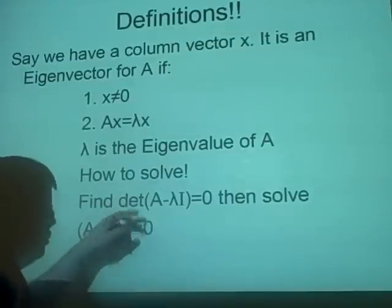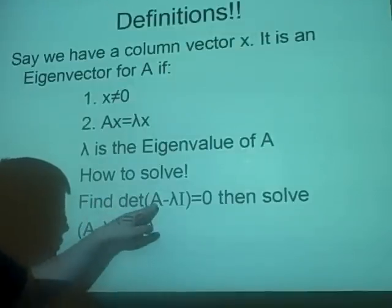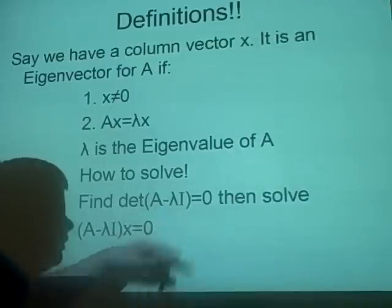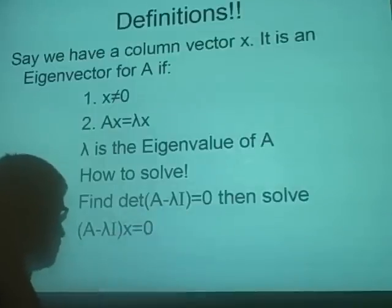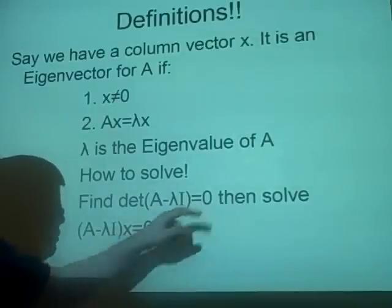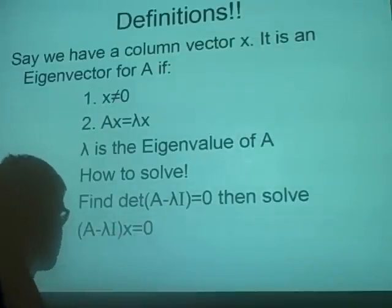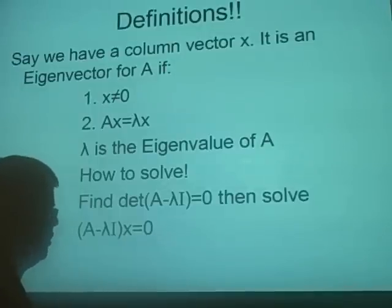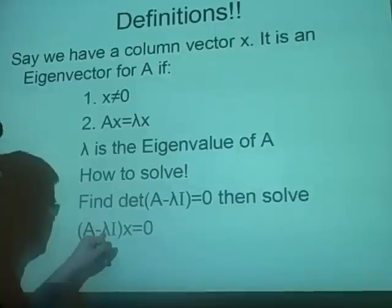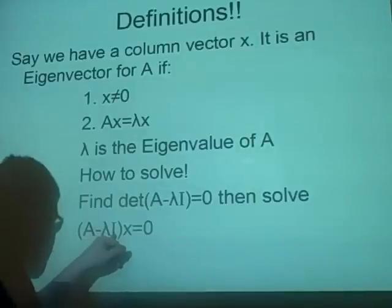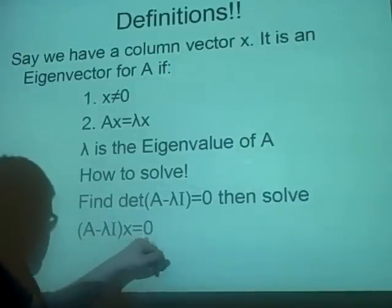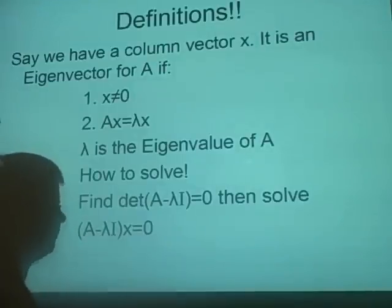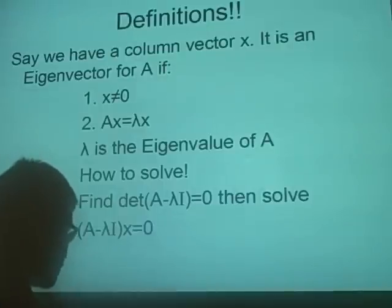To solve these, first you find the determinant of A minus lambda times the identity matrix, set it equal to zero. Then you solve the equation (A minus lambda I) times x equals zero. That's the general method.